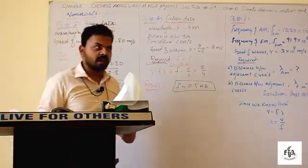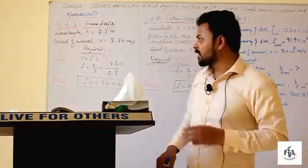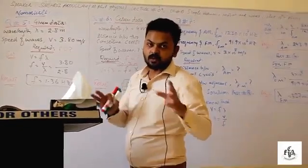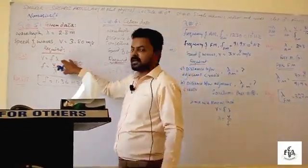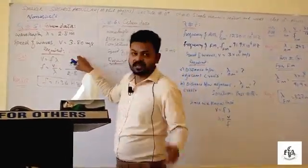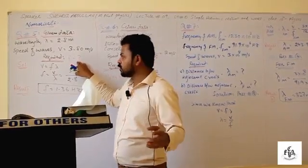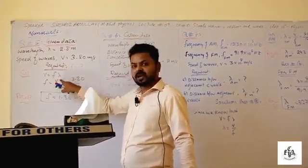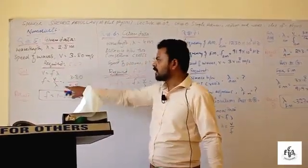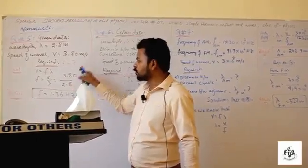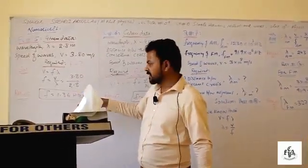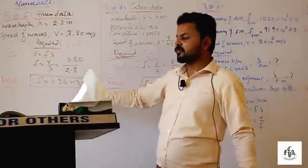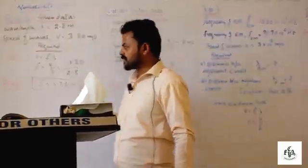We know the universal wave equation — the basic equation relating speed, frequency, and wavelength — that is v = fλ. We need to find f, so dividing both sides by λ we get f = v/λ. The value of v is 3.80 and λ is 2.8. Using a calculator we get 1.36 Hz. So the frequency is 1.36 Hz, which is the required result.